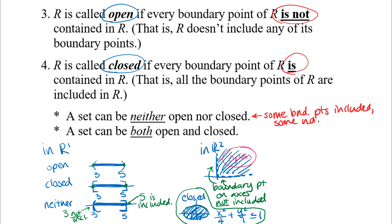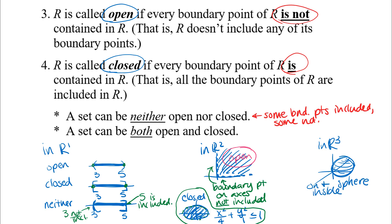In R3, the region consisting of all points on and inside a sphere is a closed region — the boundary points are all the points on the sphere, and because they're included in the region, that's an example of a closed region. We'll look at more examples in later videos of those.